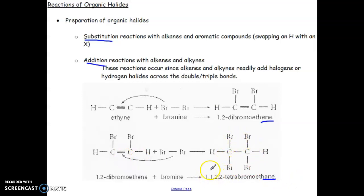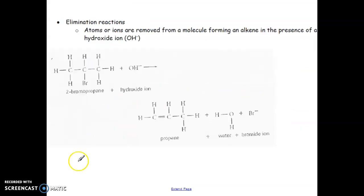So notice 1, 1, 2, 2 tetrabromoethene. Okay, and of course, so what's not being shown here is the hydrohalogenation. So this is where you would have HBr instead of Br2, right? But the process of what's going on here is very similar.